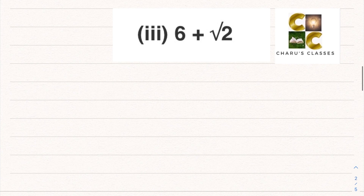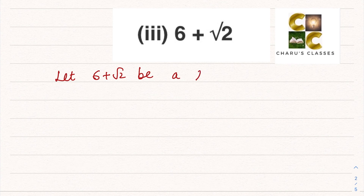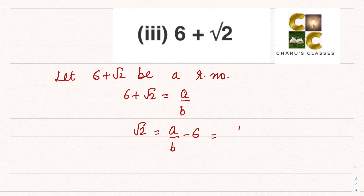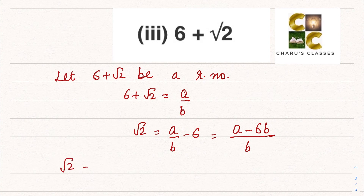Third part: 6 plus root 2. Let 6 plus root 2 be a rational number, which means I can write 6 plus root 2 equal to a by b. Rearranging, root 2 can be written as a by b minus 6, giving a common denominator of a minus 6b by b. So root 2 is equal to a minus 6b by b.